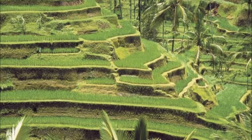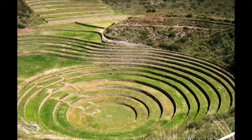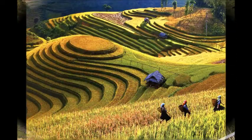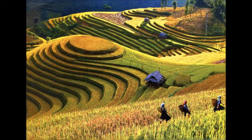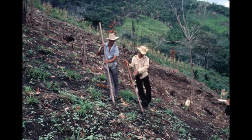The third one is terrace cultivation. In mountain areas, cultivation is done on terraced fields in a manner not very different from sedentary cultivation in terms of land use. This method is adapted to conserve soil on steep slopes.